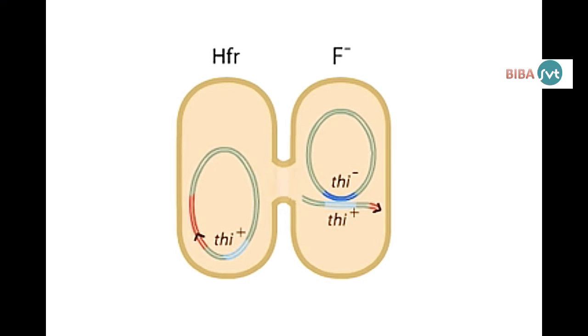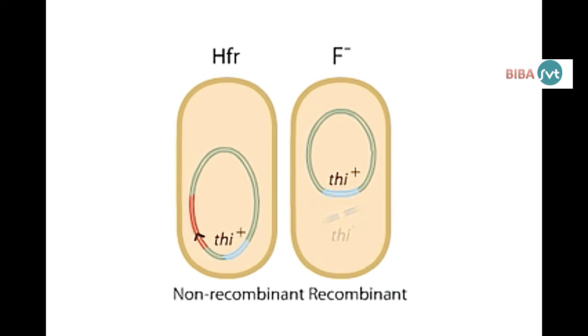When the cells separate, the donor cell chromosome is restored. In the recipient, integration events may lead to recombination of gene alleles. Linear DNA is eventually degraded.